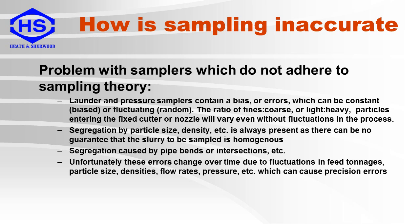Segregation is caused by pipe bends or intersections before the sampler. Unfortunately, these errors change over time due to fluctuations in feed tonnages, particle size, density, flow rates, pressures, etc., which can cause precision errors.